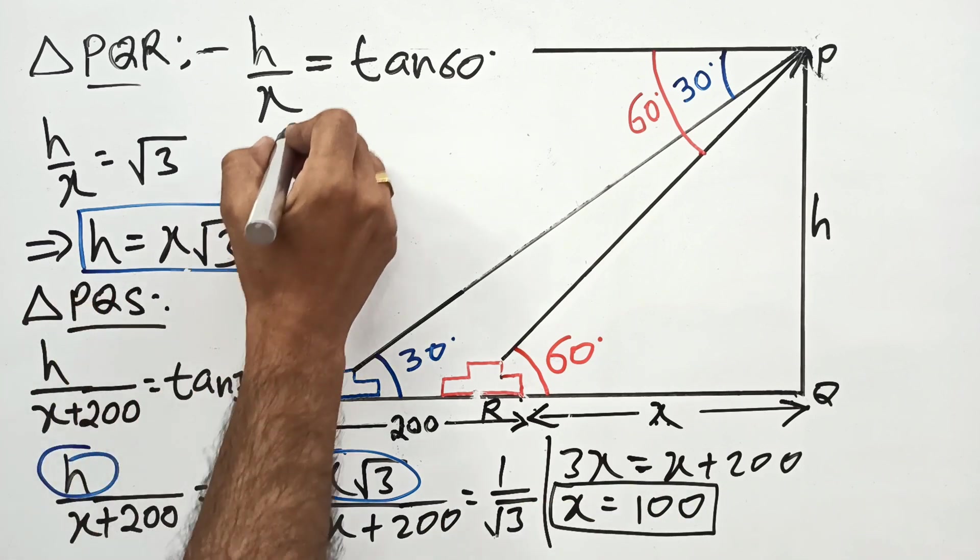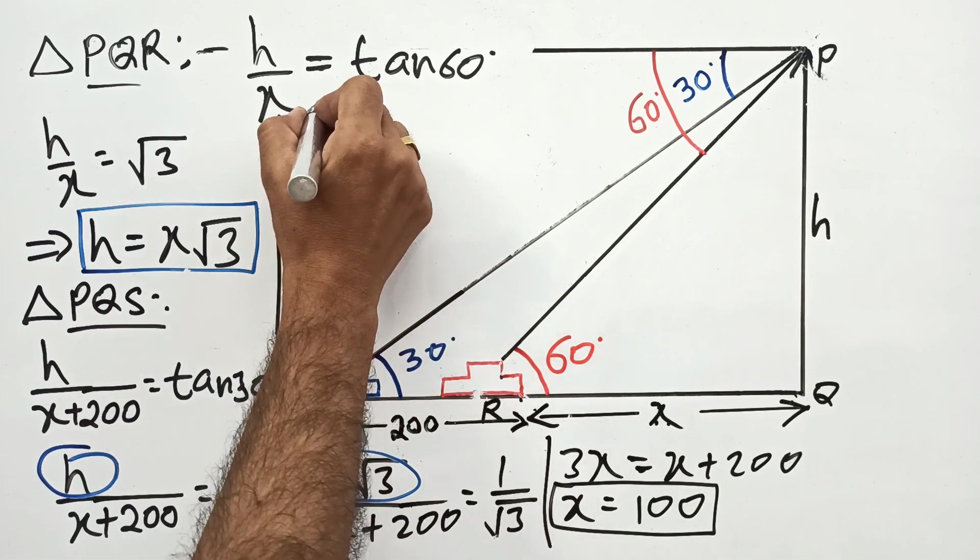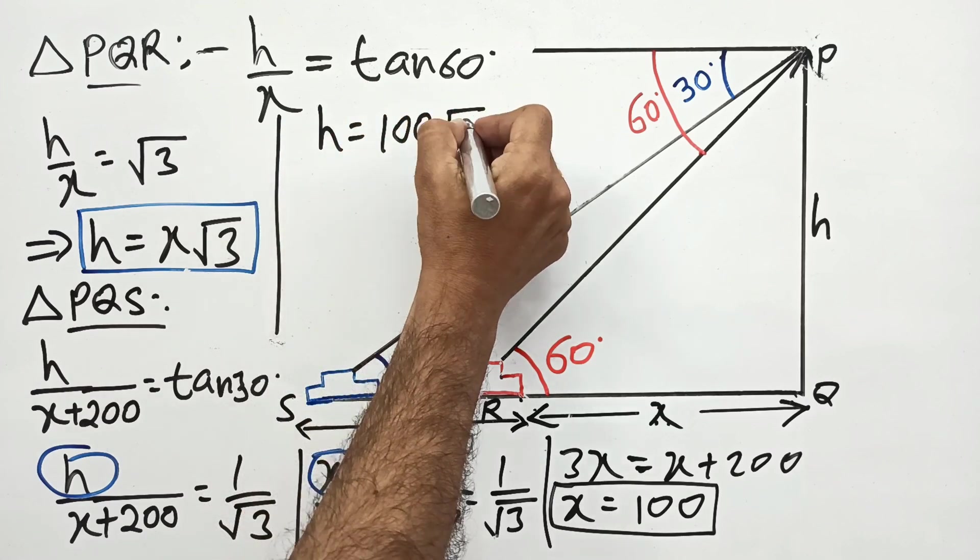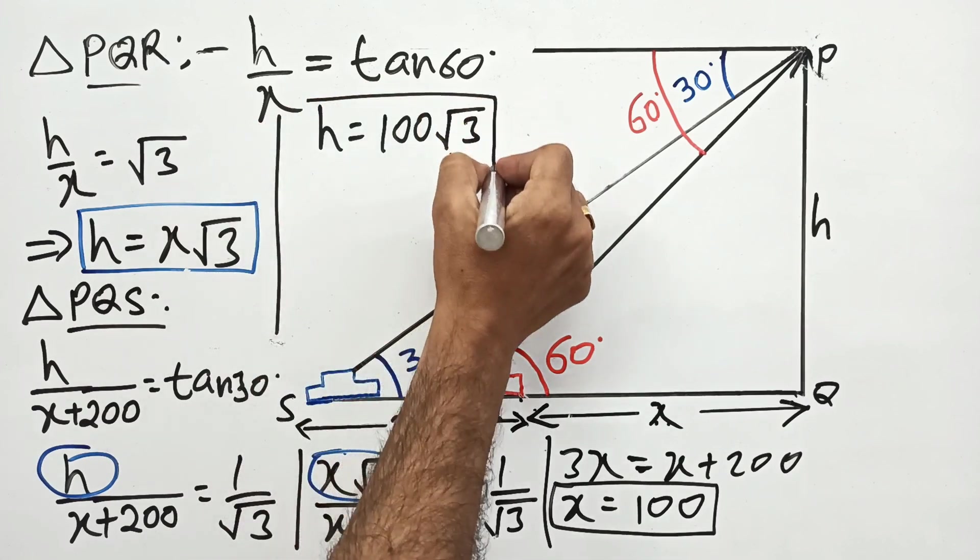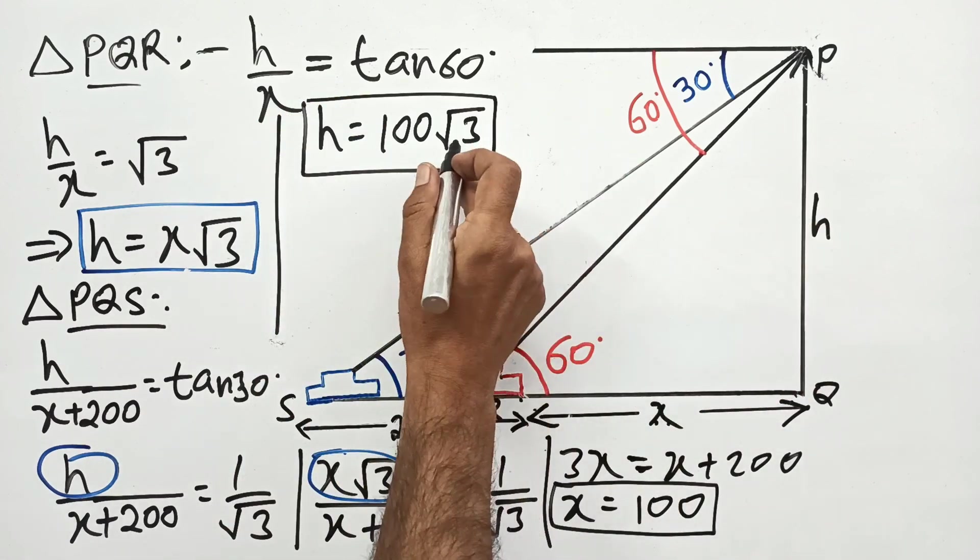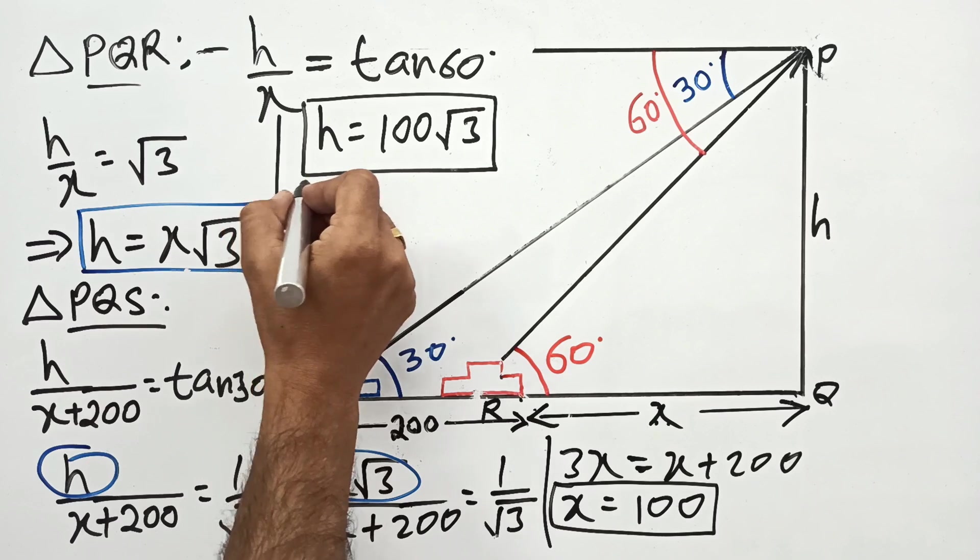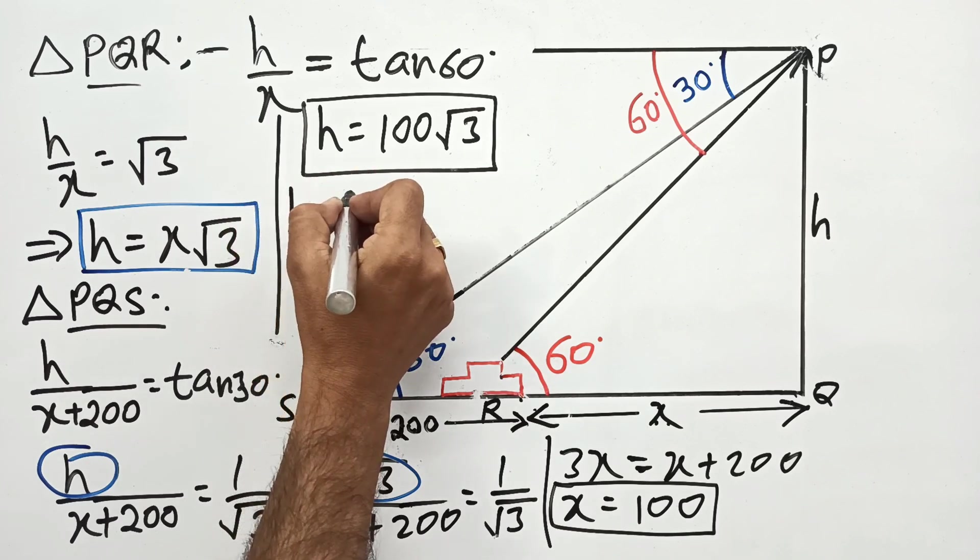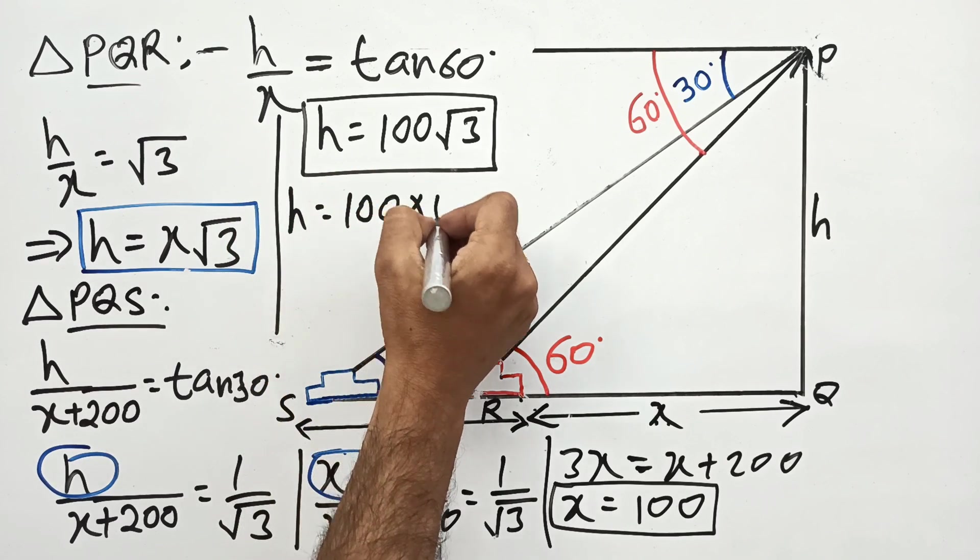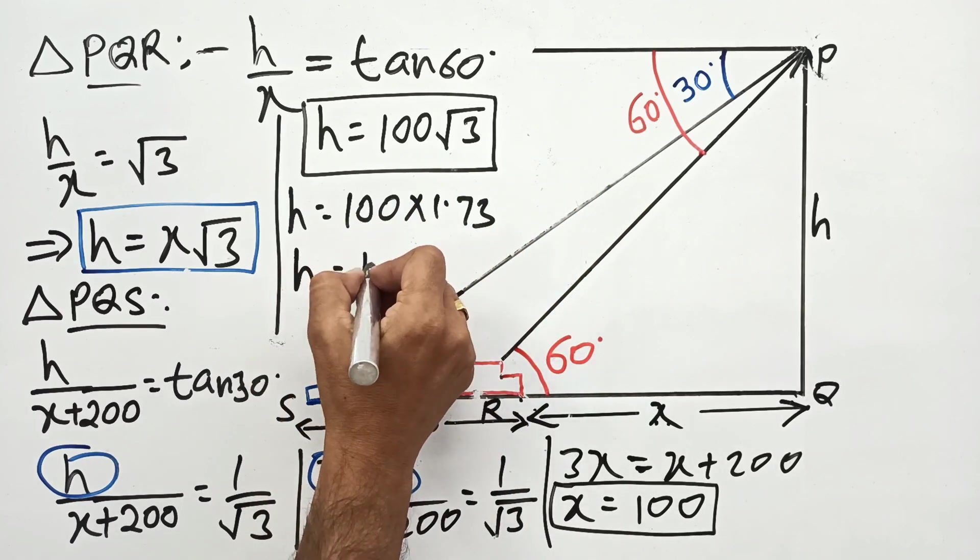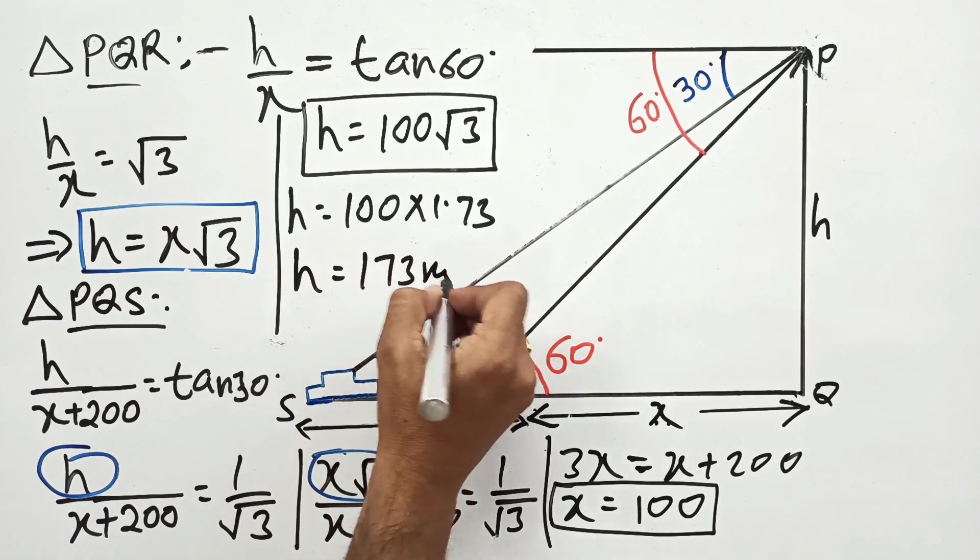Now in this equation, we can put the value of x as 100. So h equals 100 root 3. If the value of root 3 is given in the question as 1.73, we can put 1.73, so it becomes 173 meters.